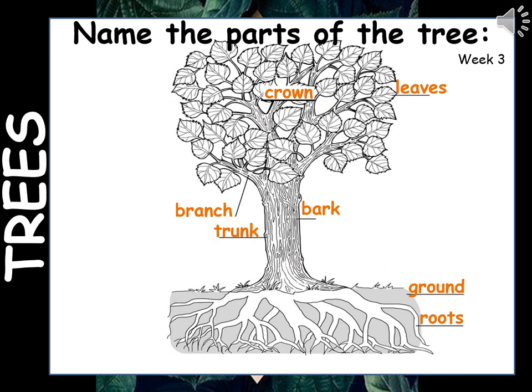Now let's check which words belonged where. Inside where the branches, twigs, and leaves are — that is the crown. Then we've got the leaves, a branch, the bark, and the trunk. You could have swapped bark and trunk since they both point at the base — as long as you know that part is the trunk, and it's covered by bark. Then we've got the ground and the roots.